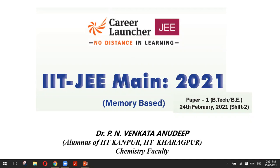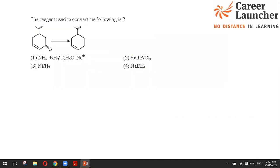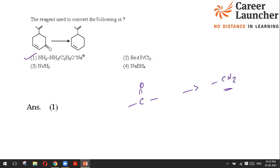The first question asks about the reagent used to convert a given compound. This is a very basic question from the carbonyl compounds — very easy. The answer is option 1, which is the Wolf-Kishner reagent. It is a direct question: Wolf-Kishner reagent converts C=O to CH2. So the answer is 1.